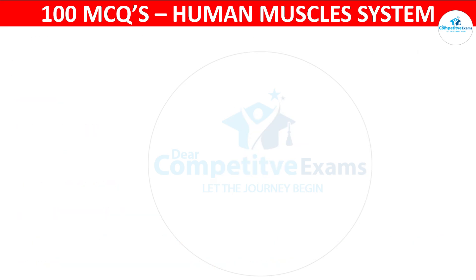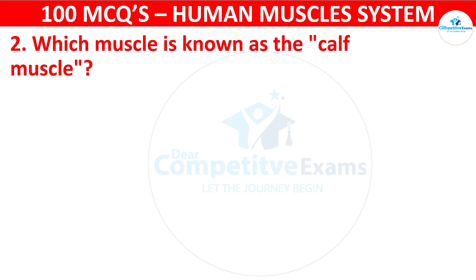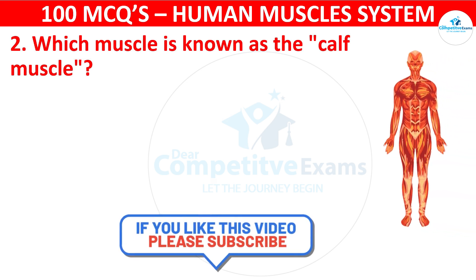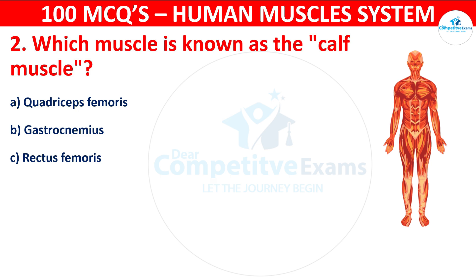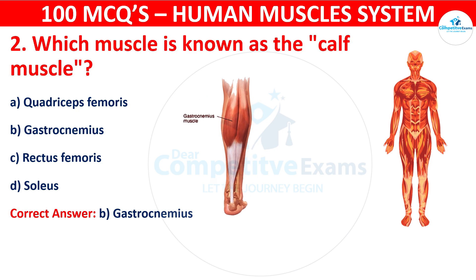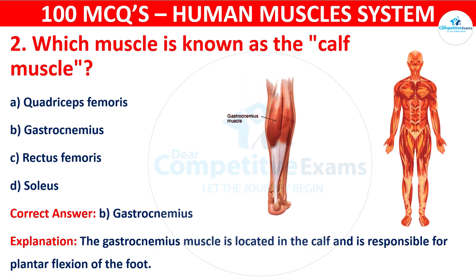Question number two. Which muscle is known as the calf muscle? Your options are: Quadriceps femoris, Gastrocnemius, Rectus femoris, or Soleus. The correct answer is B, that is gastrocnemius. The gastrocnemius muscle is located in the calf.